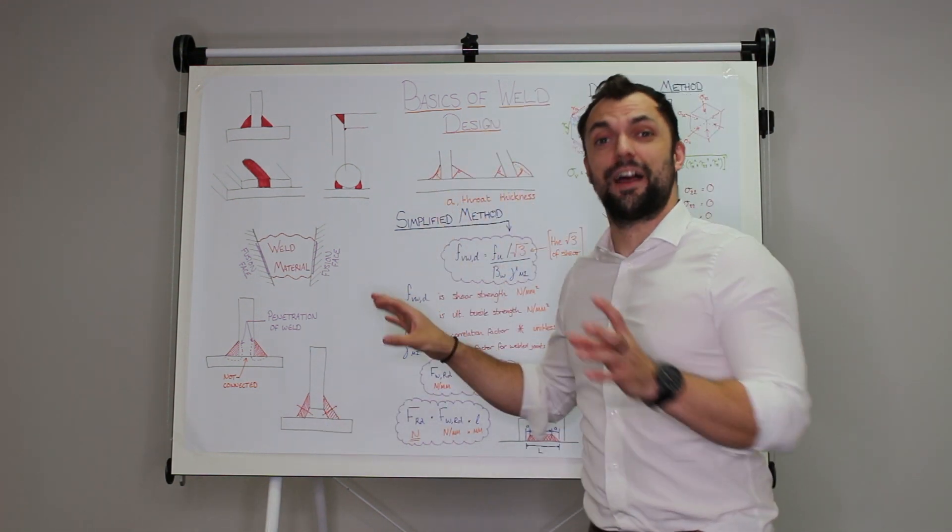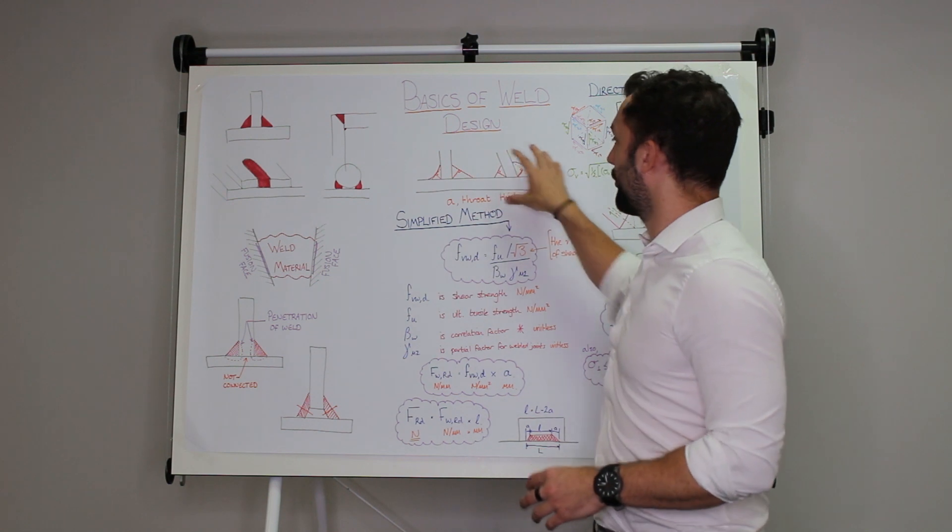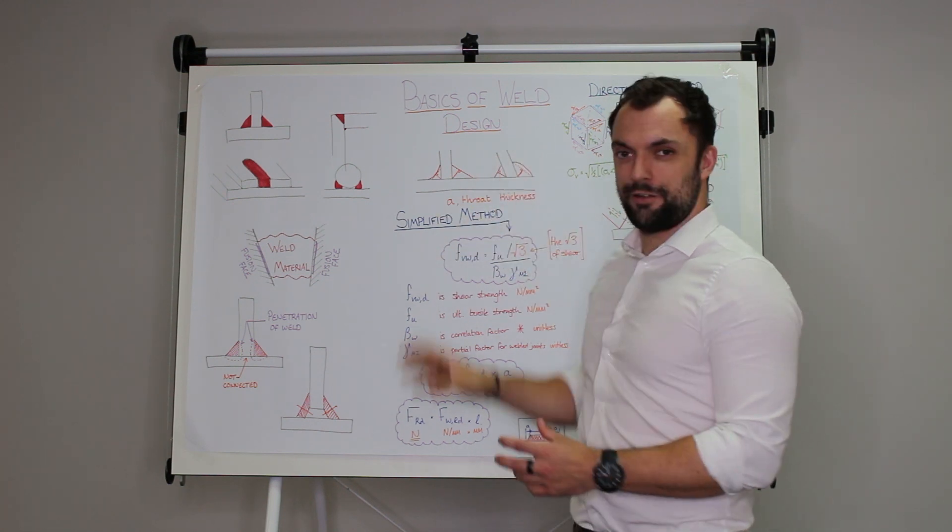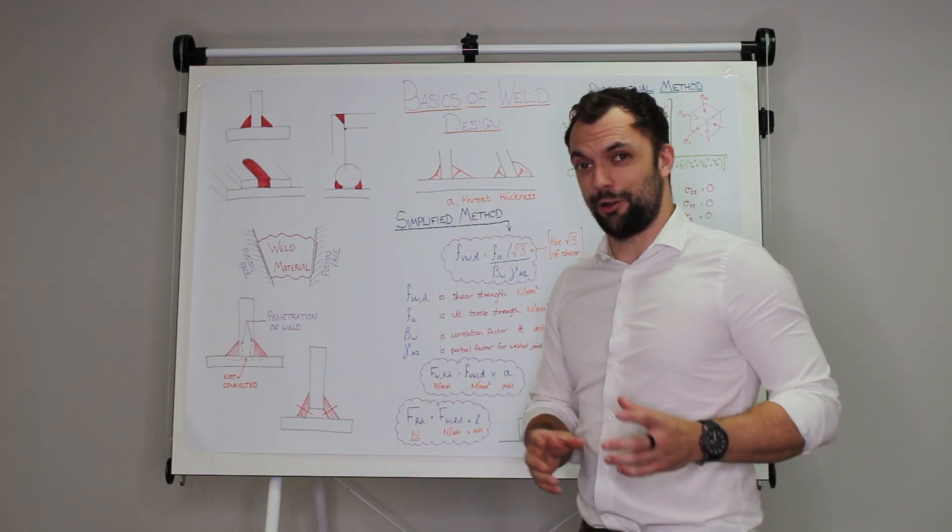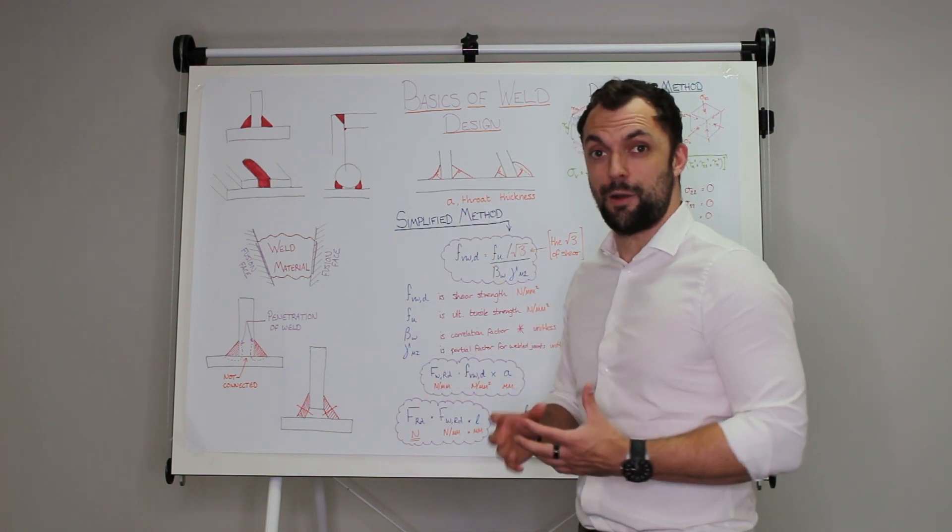Now the first thing you need to know is the size of them and that's where we come to throat thickness. And the throat thickness in the Eurocodes is defined as the height of the largest triangle that you can fit inside the shape of that weld.